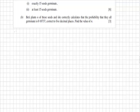In part B, we're given that Betty plants N of the seeds, and she correctly calculates that the probability that they all germinate is 0.10737, correct to 5 decimal places. Find the value of N.